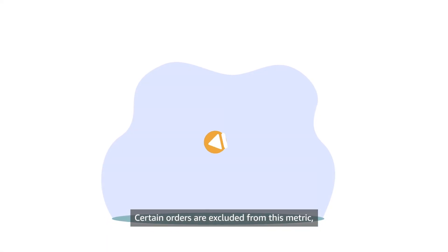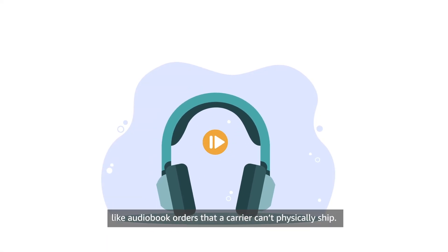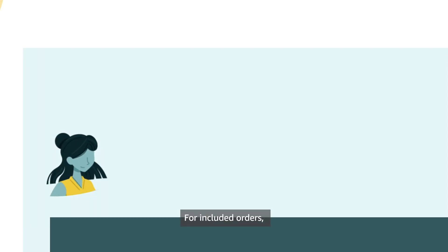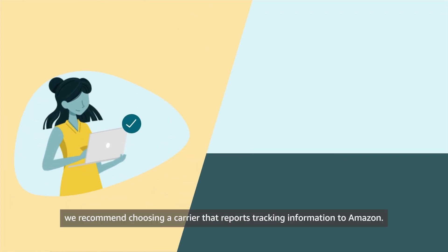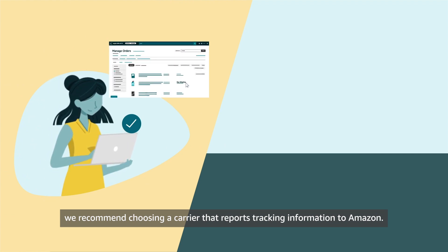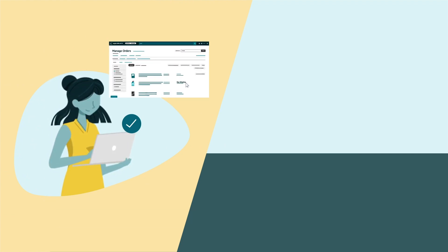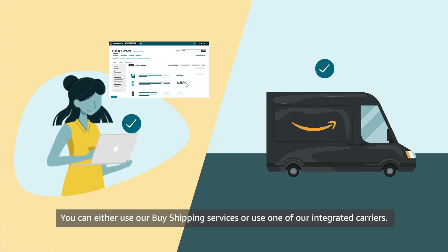Certain orders are excluded from this metric, like audiobook orders that a carrier can't physically ship. For included orders, we recommend choosing a carrier that reports tracking information to Amazon. You can either use our Buy Shipping services or use one of our integrated carriers.